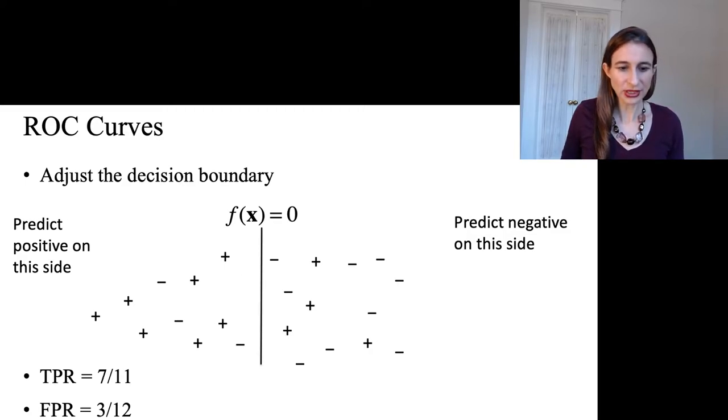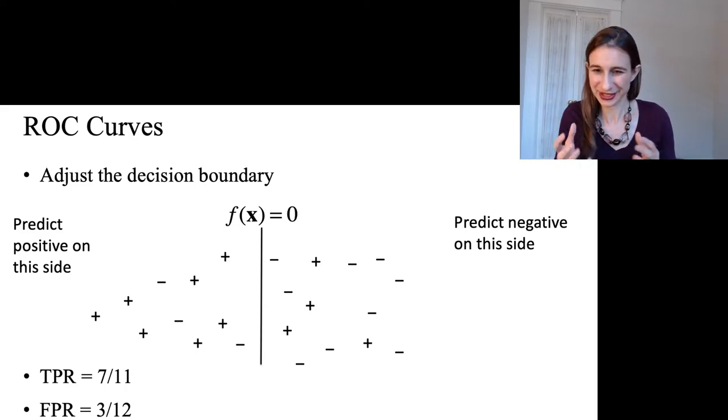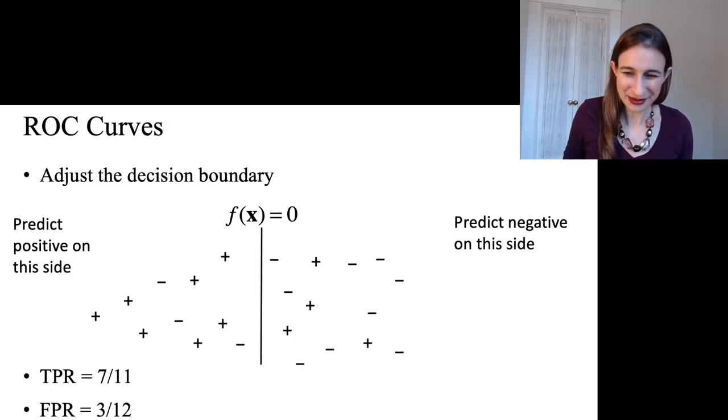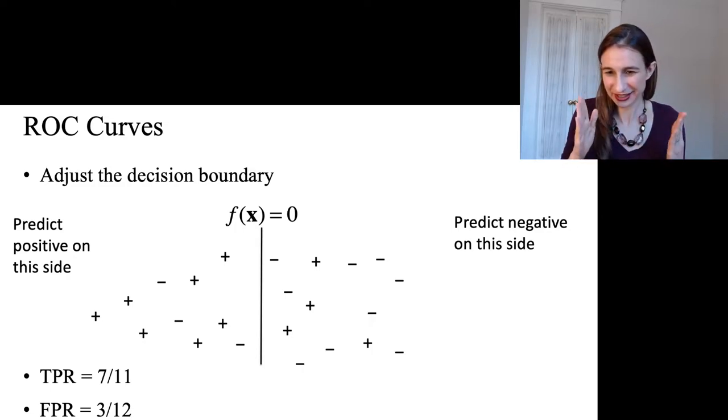Let me show you. I want to trace out an ROC curve by adjusting that dial I was talking about, this sort of sensitivity dial on the equipment. Here our dial is simply the placement of the decision boundary.